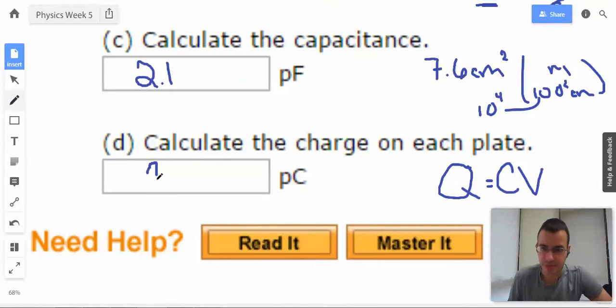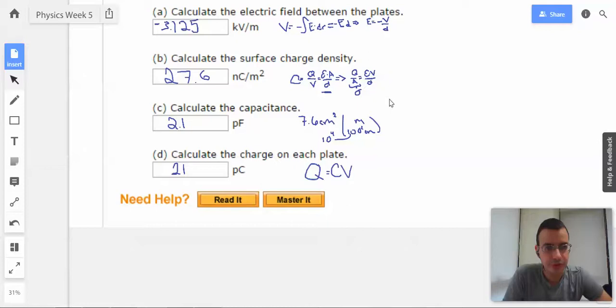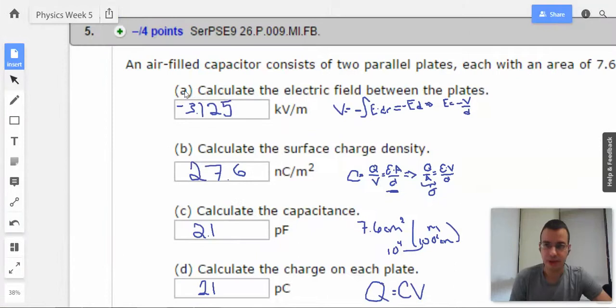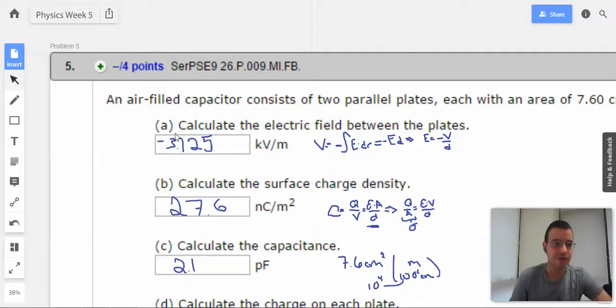This will be 21 picocoulombs. The secret here is knowing that voltage equals negative E dot dr, which becomes voltage equals negative electric field times distance, and knowing that capacitance is defined as charge over voltage, which for a parallel plate capacitor is epsilon times area divided by distance. That's number five, on to number six.